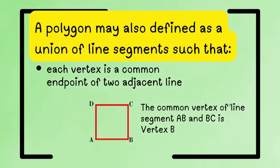Ano pa bang pwede natin i-define sa polygon? So, a polygon may also be defined as a union of line segments. So, pag sinabing union, yung parang kinumbine, parang pinag-isa. So, isa dito, sinasabi na, it's a union of line segments such that each vertex is a common endpoint of two adjacent lines. Now, consider this square.